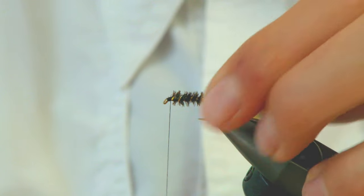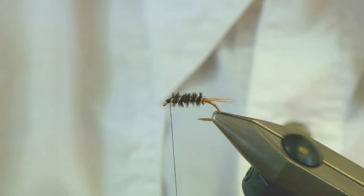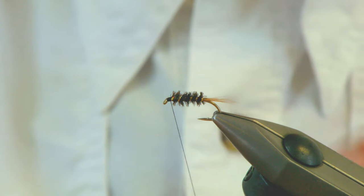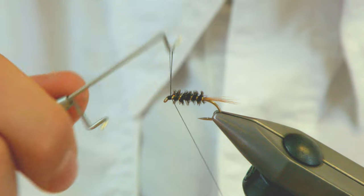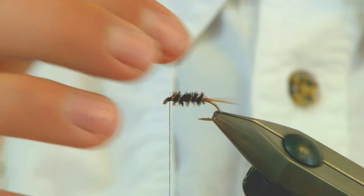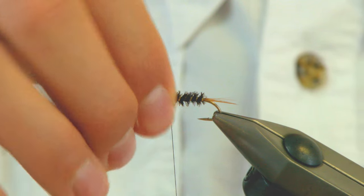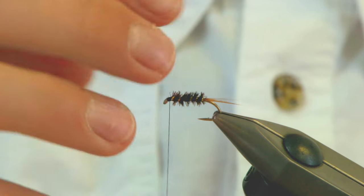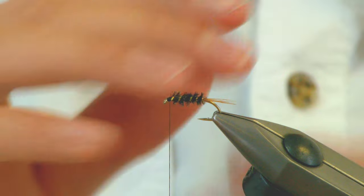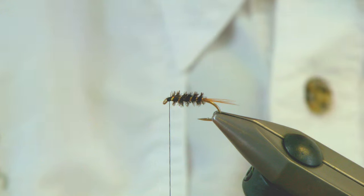Now what I like to do before I tie the throat hackle is just do a single turn whip finish. Now what this allows me to do is it locks in all those fibers. Now if you knock your bobbin, what will happen is it will all come loose and your body and your rib will all fall off and you don't want that to happen.